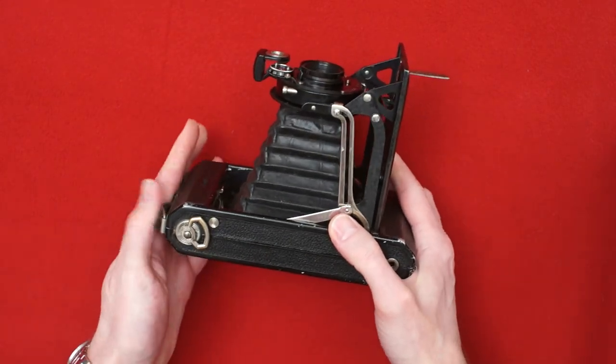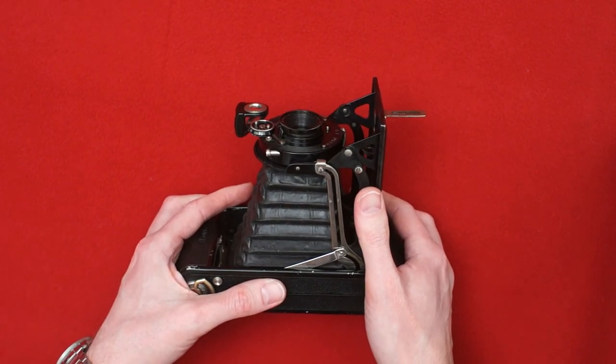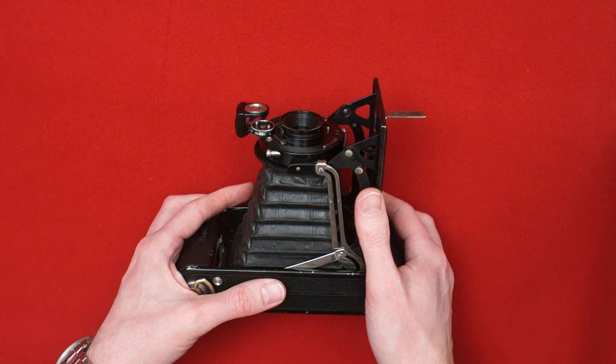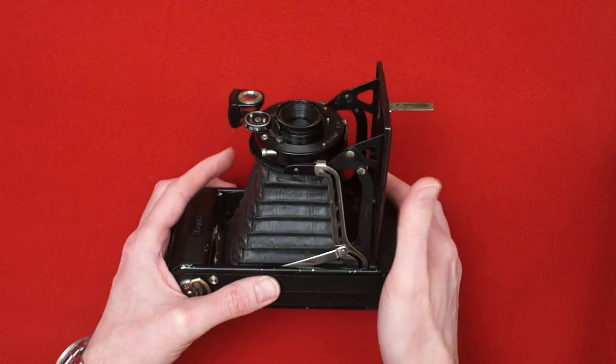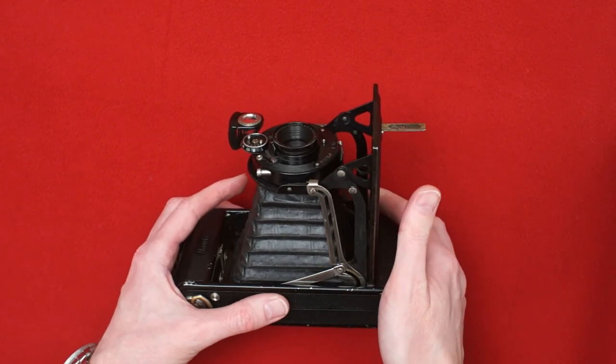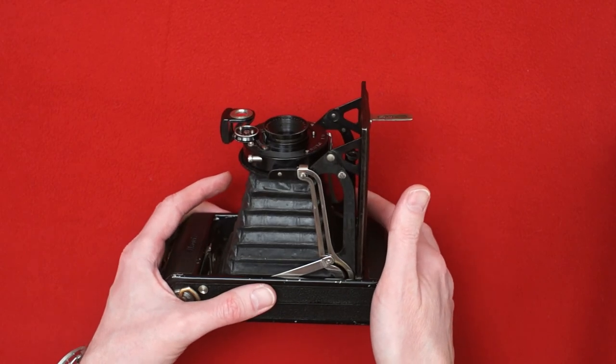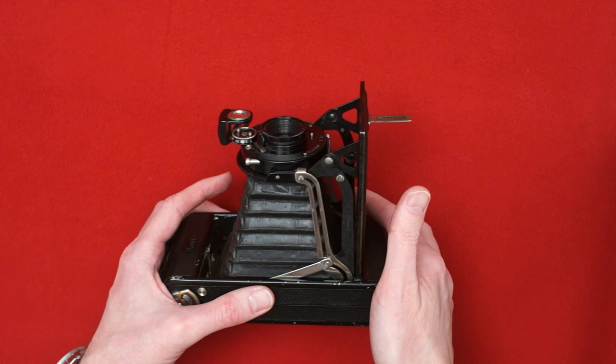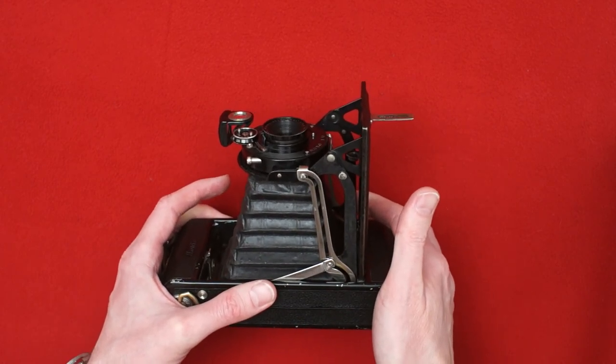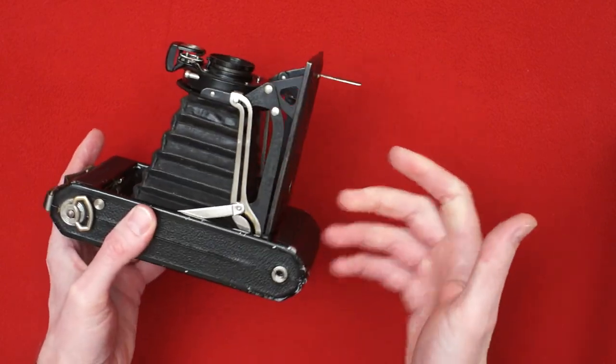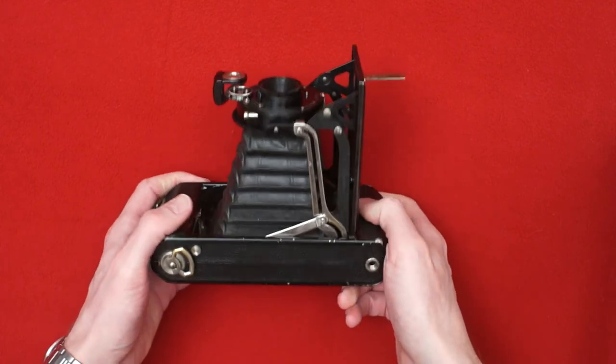And if we compare it to the famous Contax, the 35 millimeter rangefinder, nowadays a collector's item, they go for a lot of money. Contax also came along in 1932 and the catalog price was 245 Reichsmarks for the cheaper version with f3.5 lens. And the more expensive version with f2.8 was 270 Reichsmarks. So the 35 millimeter Contax was like six times as expensive as this camera.